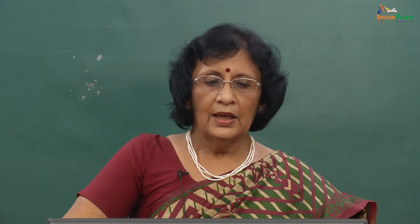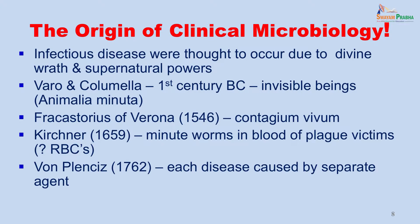The origin of microbiology started very late, almost towards the 19th century. Initially, infectious diseases were thought to occur due to divine wrath and supernatural powers — the anger of the gods. Varro and Columella in the 1st century BC were the first to hypothesize that there may be invisible beings causing these infections. In 1546, Fracastorius from Verona proposed that there was a contagium vivum spreading from person to person. In 1659, Kirchner actually saw something in the blood of a plague patient and thought he saw the microbe causing it, though without a proper microscope, and his final identification was probably not Yersinia pestis.